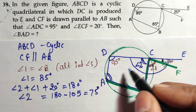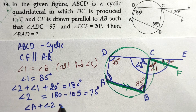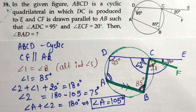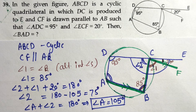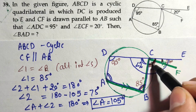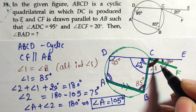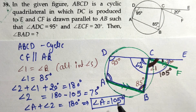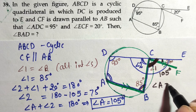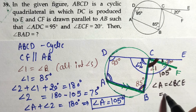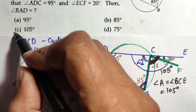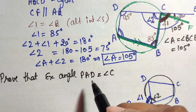Now by the property of cyclic quadrilateral, angle A plus angle 2 equals 180 degrees. So angle A equals 180 minus 75, which is 105 degrees. Alternatively, using the exterior angle property of a cyclic quadrilateral: the exterior angle equals the interior opposite angle. The exterior angle BCE is 85 plus 20 equals 105 degrees, which equals interior opposite angle A. So angle BAD is 105 degrees — option C is correct.